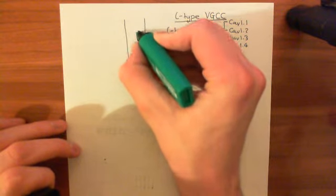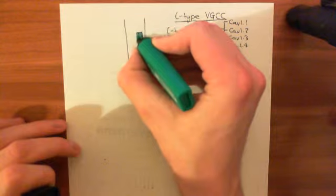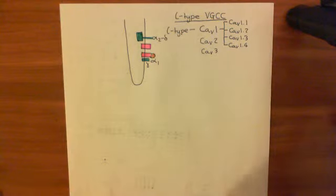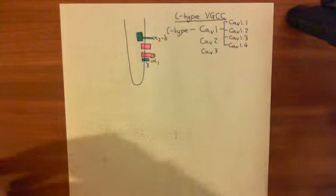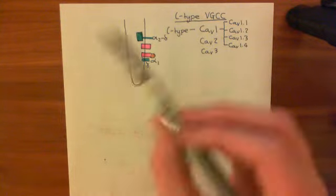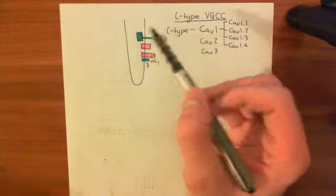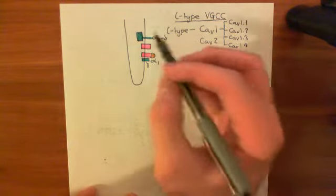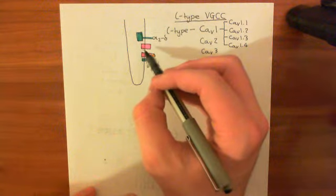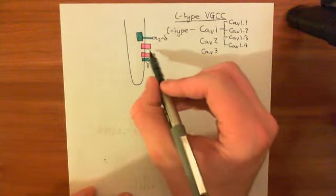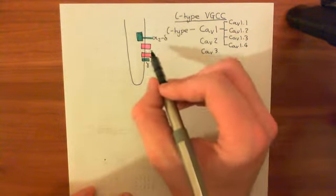Both alpha-2 and delta are encoded by the same gene. The gene for the alpha-2 delta subunit makes a protein which is then cut into two pieces, and those two pieces are attached back together in a different way to make the alpha-2 delta subunit. The delta bit straddles the membrane. When a cardiac action potential occurs, this L-type voltage-gated calcium channel is going to open.